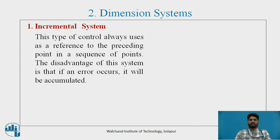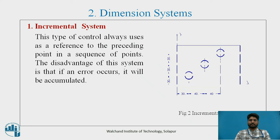Second, dimension systems. In dimension systems there are 2 types: one is the incremental system and the other is the absolute system. In the incremental system, this type of control always uses as a reference the preceding point in the sequence of points. The disadvantage of this system is that if an error occurs, it will be accumulated. The reference point is always from the preceding point and not from the origin point, so this type is called the incremental system.